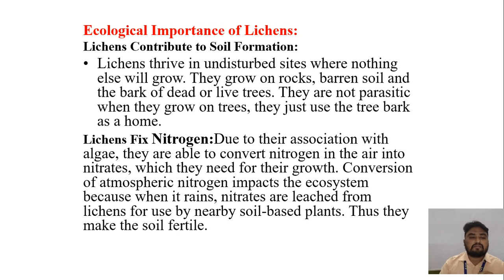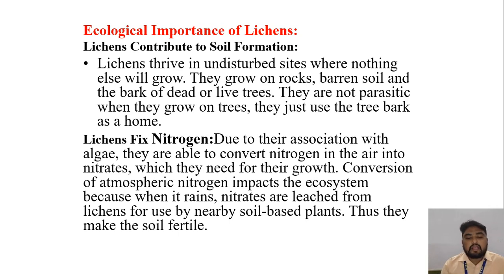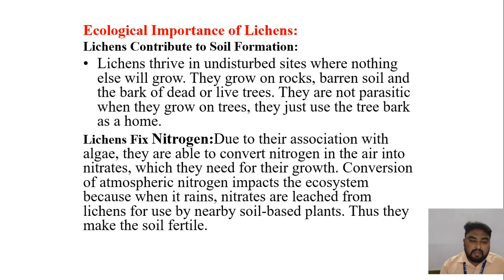Ecological importance of lichens: Lichens contribute to soil formation. They grow on undisturbed sites where nothing else will grow — on rocks, bare soil, and on the bark of dead or live trees. They are not parasitic; when they grow on trees, they just use the tree bark as a home. Lichens fix nitrogen; due to their association with algae, they are able to convert the nitrogen in the air into nitrates which they need for growth. Conversion of atmospheric nitrogen impacts the ecosystem because when it rains, nitrates are leached from lichens for use by nearby soil-based plants, thus making the soil fertile.